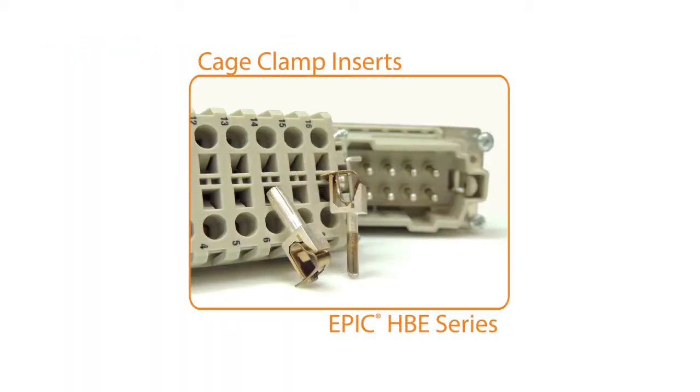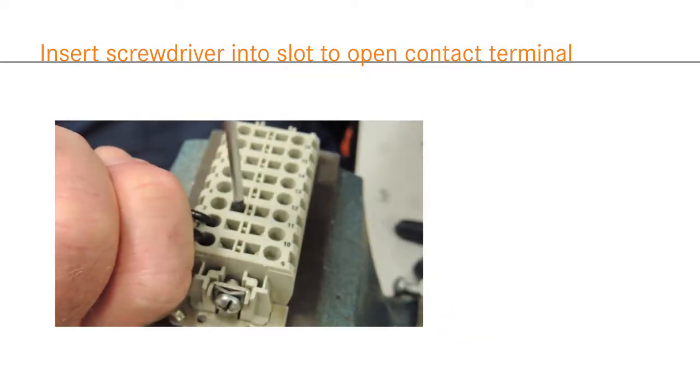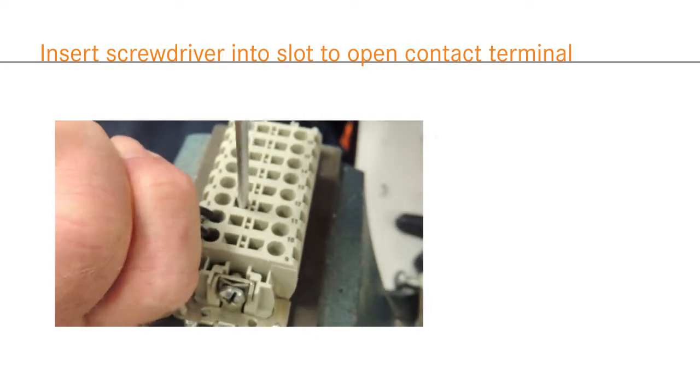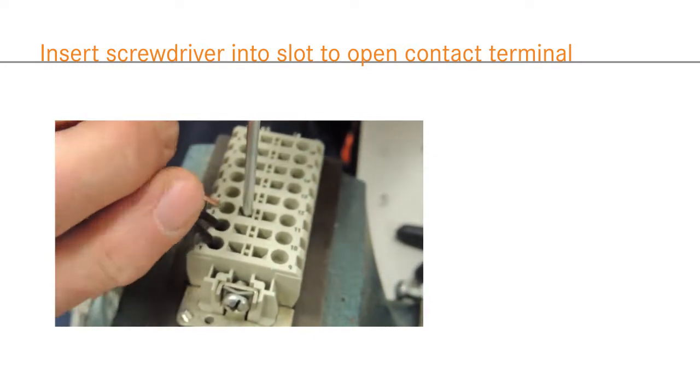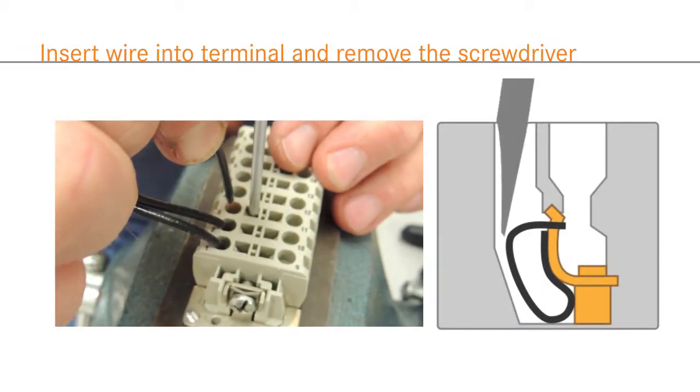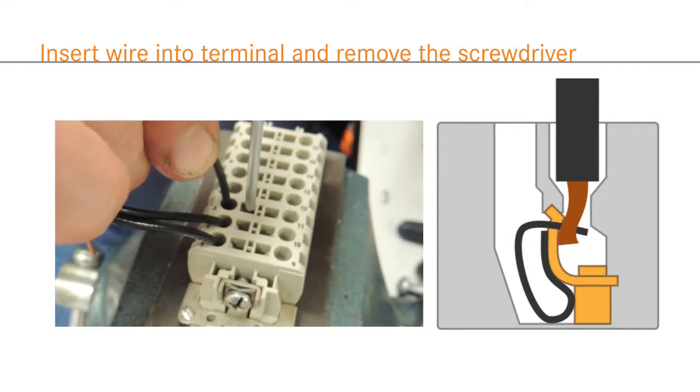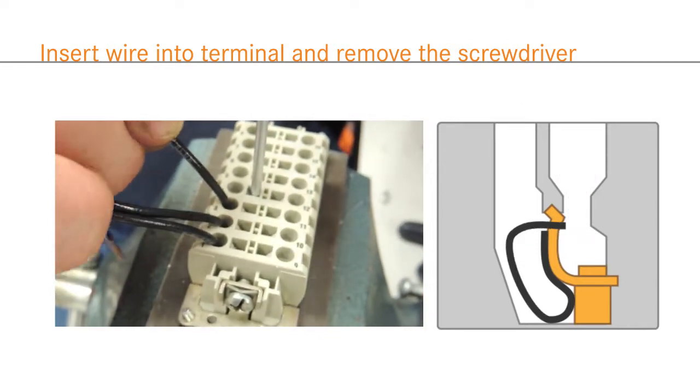Cage clamp inserts offer vibration resistance, but conductors can be removed, unlike a permanent crimp termination. To wire a cage clamp insert, first use a thin screwdriver to open the internal clamp mechanism. Insert the screwdriver at an angle and then straighten it to open the clamp, as shown here. Then, place the stripped wire into the terminal and remove the screwdriver to clamp everything in place.